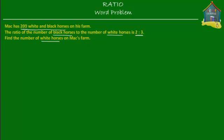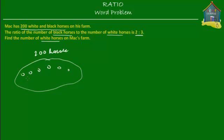So Mac has 200 either white or black horses on his farm — some of them are white and some of them are black, altogether 200 in number. What we also know is that the horses are in the ratio 2 to 3 of black horses to white horses. So for every 2 black horses on the farm, there are 3 white horses.